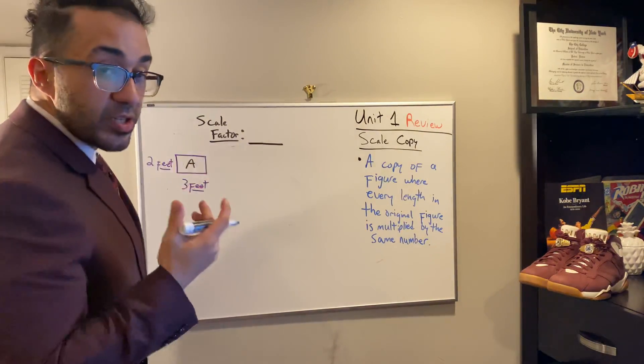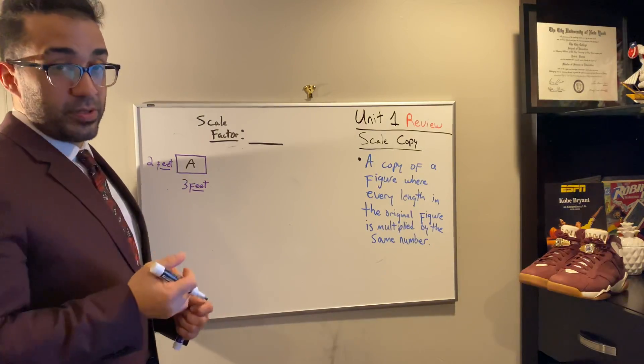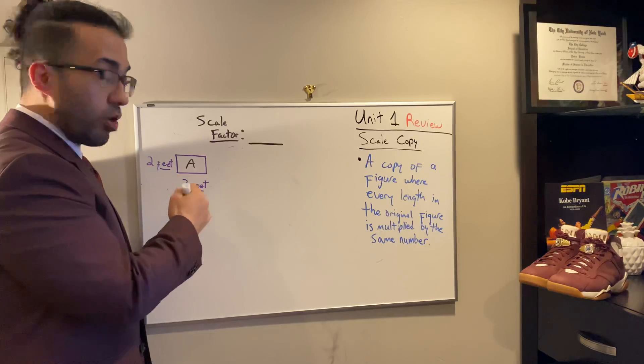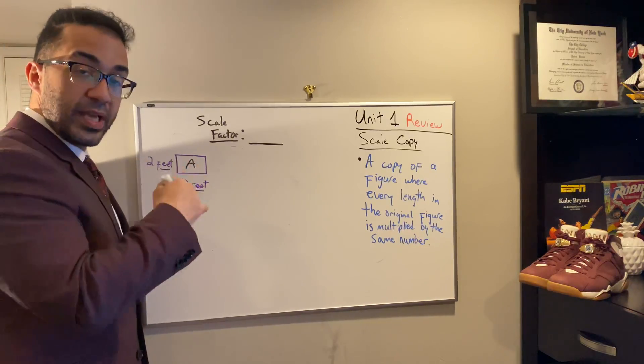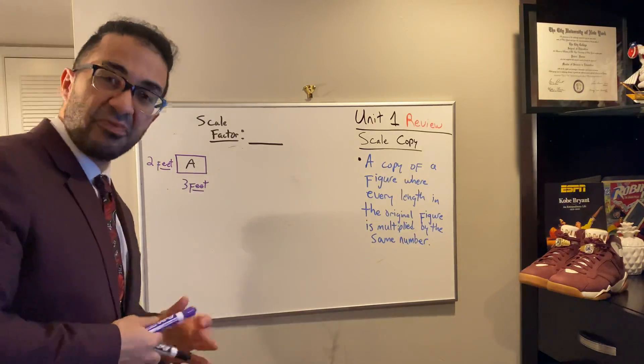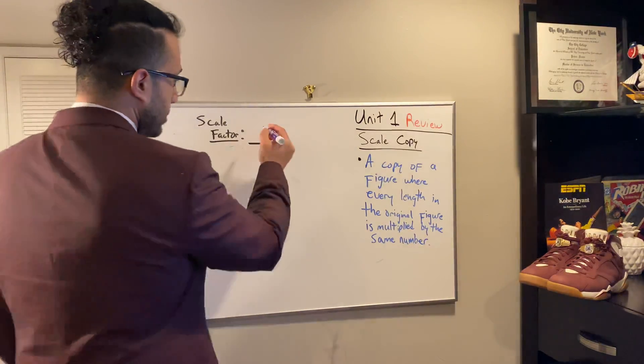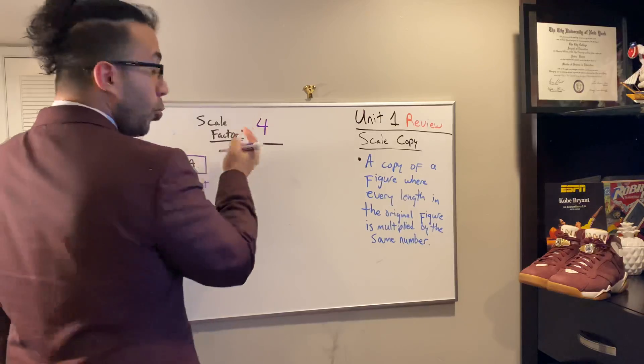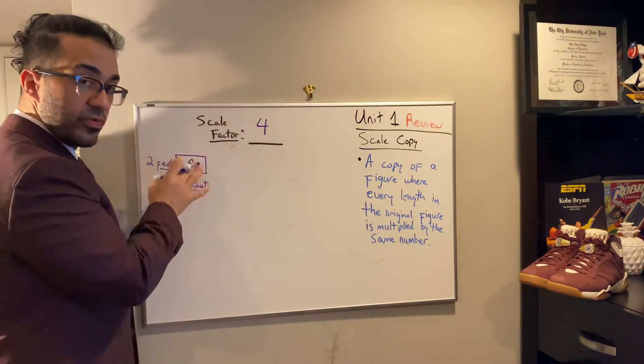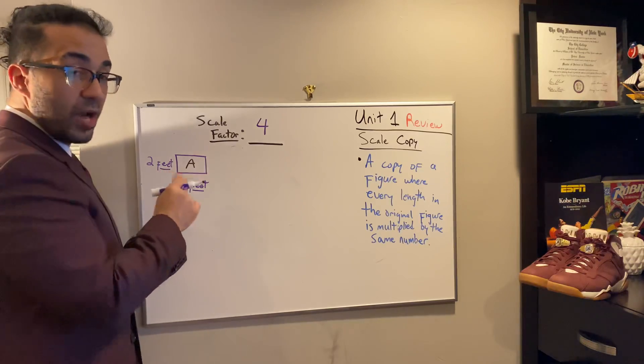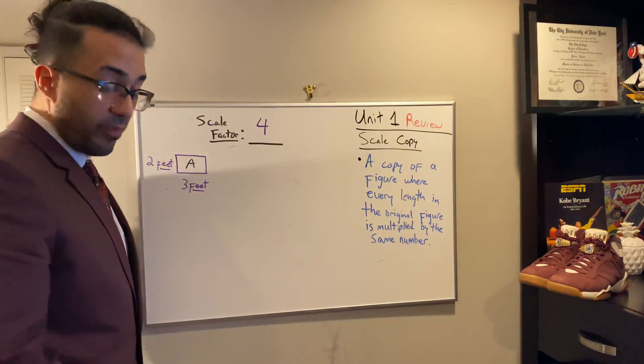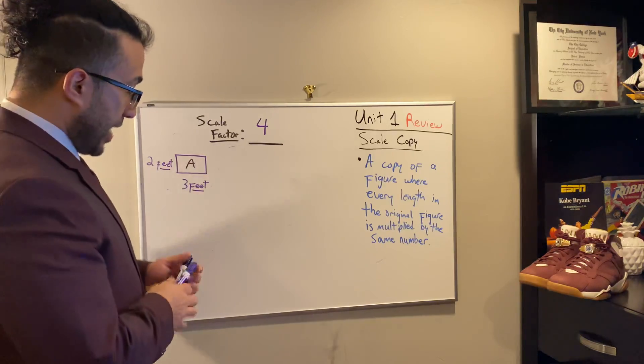The next thing we need to know is what is our scale factor. Now the scale factor is the factor in which we're going to actually multiply our original figure by in order to get our new figure. Let's say we have a scale factor of four. What we are saying here is that all the measurements of the original figure A are now going to be multiplied by a factor or scale factor of four. And that is as straightforward.